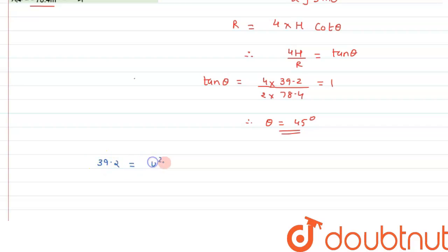So height is with us, that is 39.2, and that equals u square sine square 45 divided by 2 times g. g can be taken as 10. We can give the reason as since...